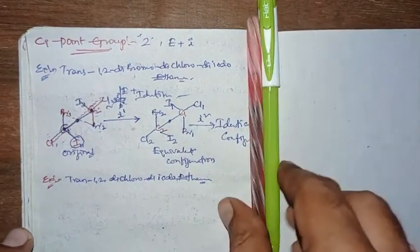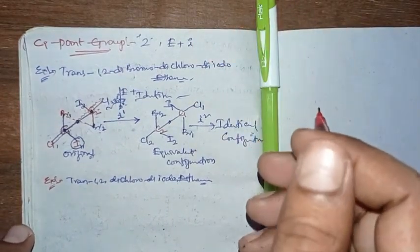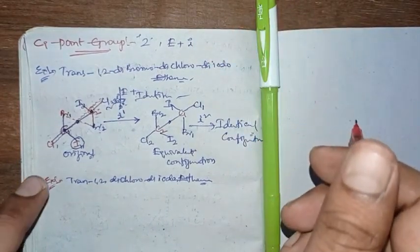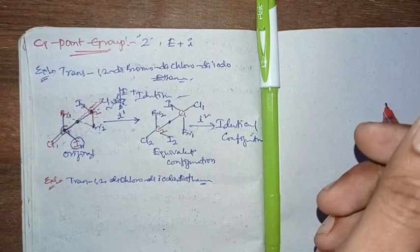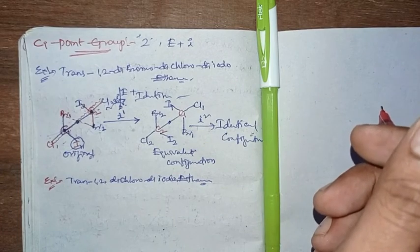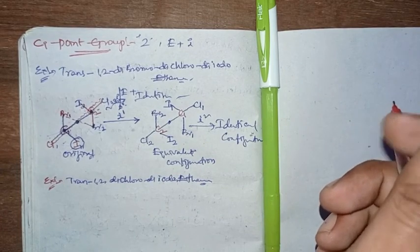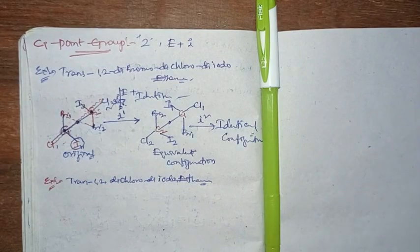So here I stop the CI point group. In the next session, we will continue with the next point group. Thank you.